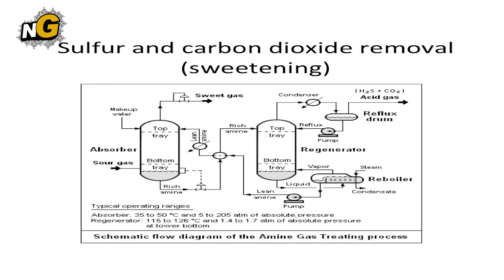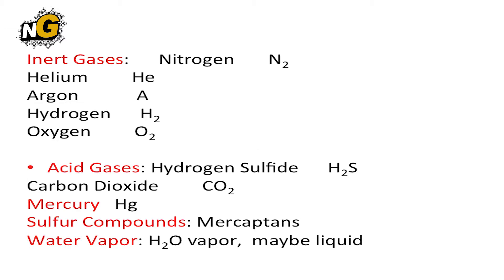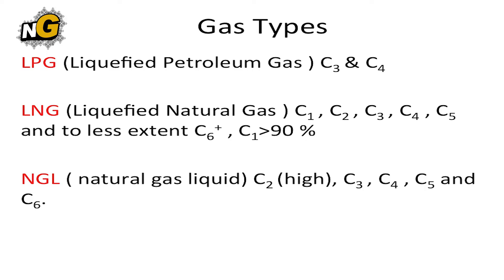Natural gas consists of hydrocarbons, inert gases, acid gases, mercury, water vapor, and sulfur compounds. There are eight different types of gases: rich gas, lean gas, dry gas, sour gas, sweet gas, LPG (liquefied petroleum gas), LNG (liquefied natural gas), and NGL (natural gas liquid).